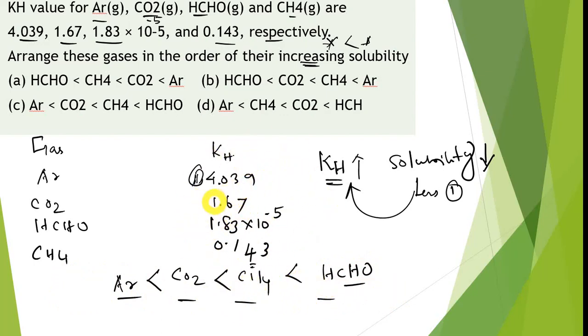Here Ar is less than CO2. This option here, C is the right option. Ar is less than CO2 less than CH4 less than formaldehyde. This is how we have to work.